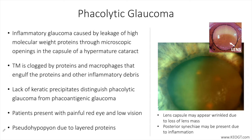Patients often present with a painful red eye, photophobia, and decreased visual acuity. Slit lamp exam may reveal a pseudohypopion composed of layered proteinaceous deposits, and close examination of the lens capsule may reveal wrinkling due to loss of mass with a mature or hypermature cataract.